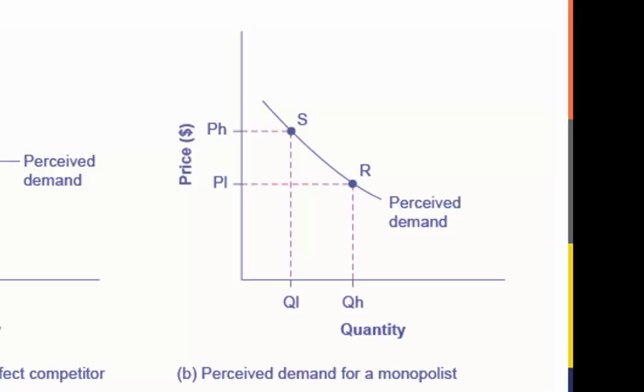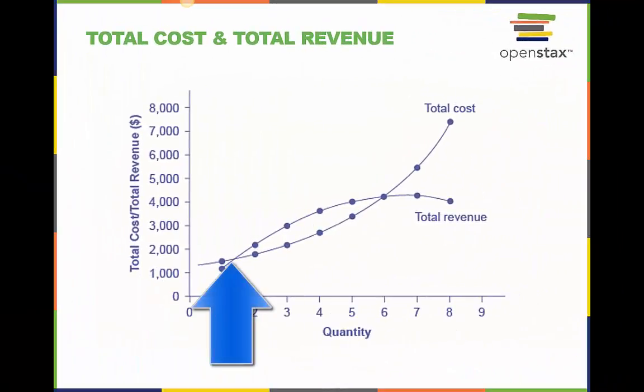In other words, it makes the price through the output level it chooses. Total revenue for the monopoly firm in this graph first rises, then falls. Low levels of output bring in relatively little total revenue because the quantity is so low. High levels of output bring in relatively less revenue because the high quantity pushes down the market price.